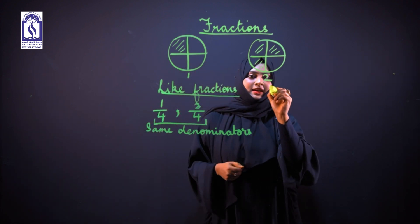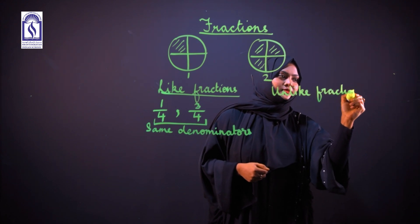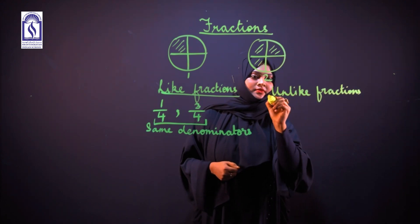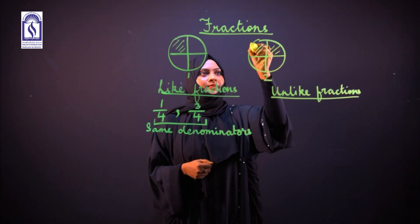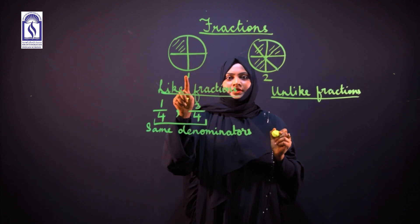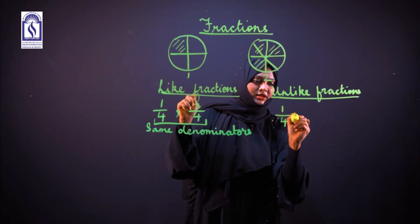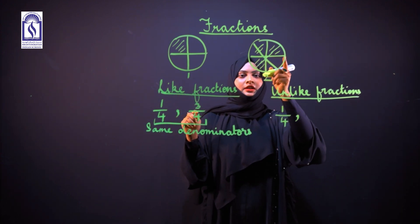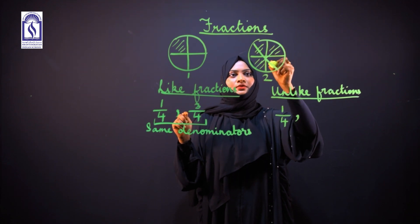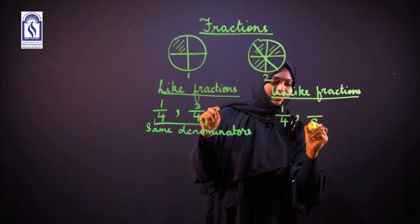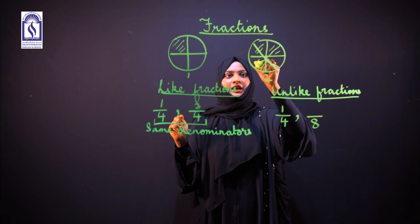Whereas unlike fractions are just the opposite of like fractions. Now if you see figure one, total parts we have four, out of which one is shaded. If you look at figure two, I have divided into eight equal parts: one, two, three, four, five, six, seven, eight. Out of which six are shaded: one, two, three, four, five, six.